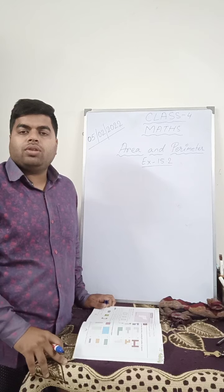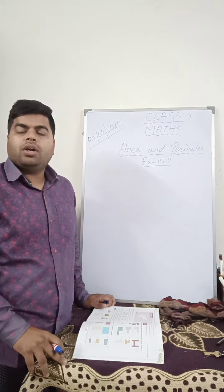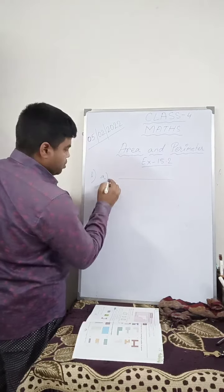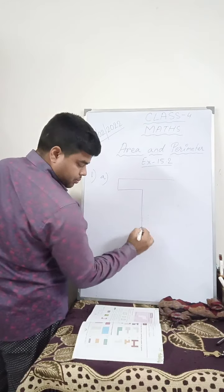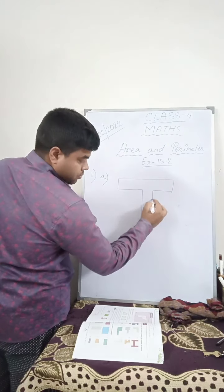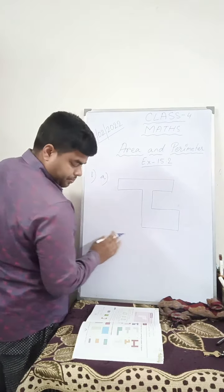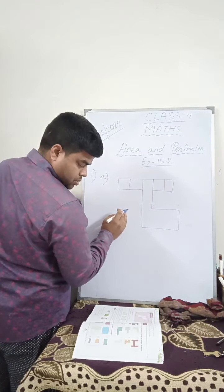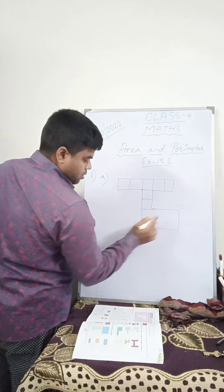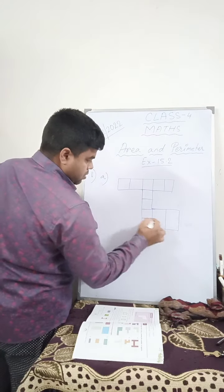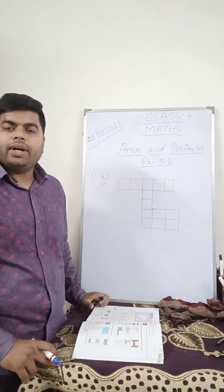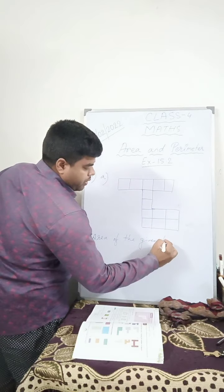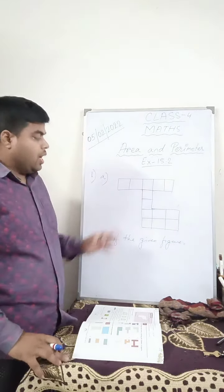In 15.2 they have asked you to find out the area of the given figure. What you have to do is count how many boxes are enclosed in the given figure. So suppose this is the figure, question number A. Now this is the given figure. How do you find the area? Then you will write here, area of the given figure is equal to... You count how many squares are there.